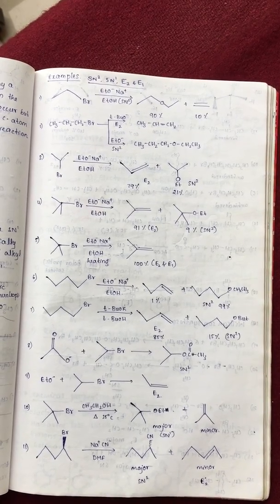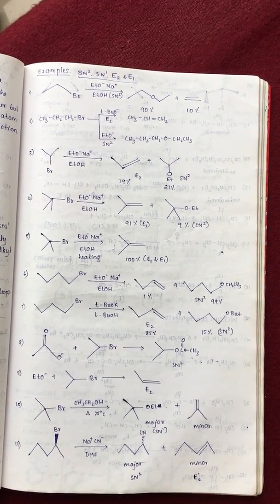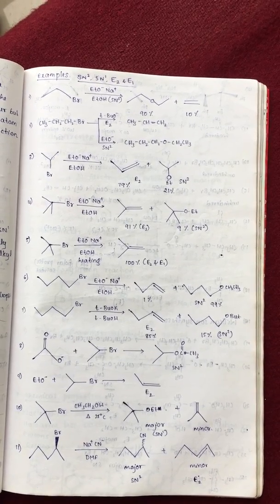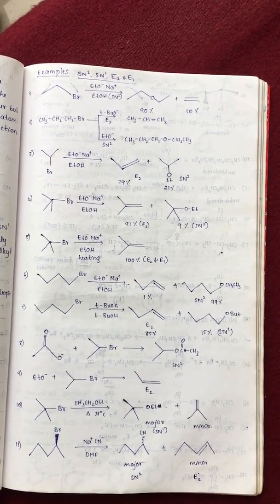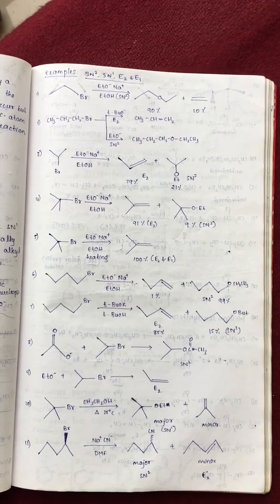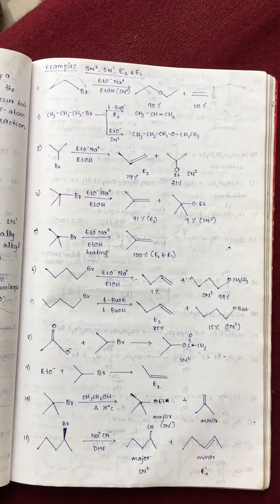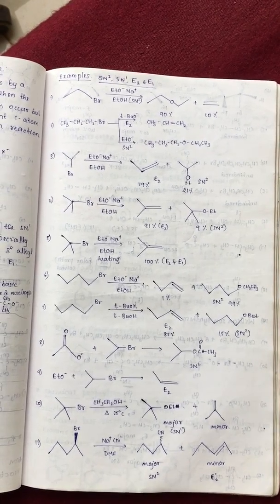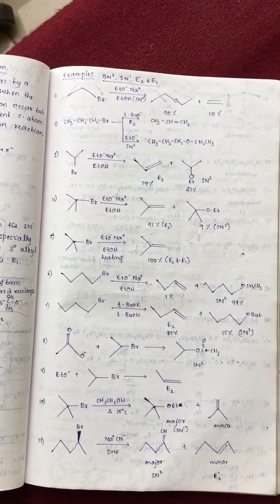Next, acetate ion plus isopropyl bromide. It gives substitution product because there is a weak base. Ethoxide ion plus isopropyl bromide leads to elimination because ethoxide is a strong base.